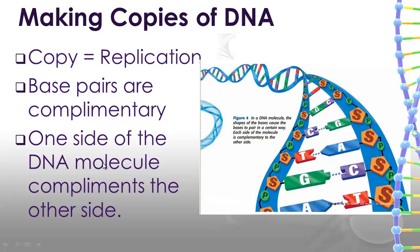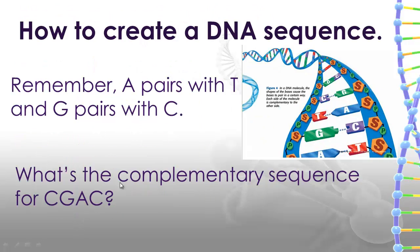So how do we make a copy of our DNA? Copying is also called replication, and it's based on the idea that bases fit together with each other. Cytosine is always going to fit together with guanine — we call this complementary base pairs. If we remember that adenine always pairs with thymine and guanine always pairs with cytosine, then we can figure out the complementary sequence for any group of base pairs. For example, if we had C, G, A, C, what would the complementary base pair sequence be for that string of bases?